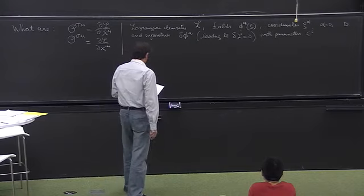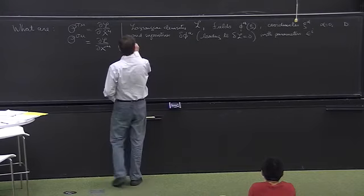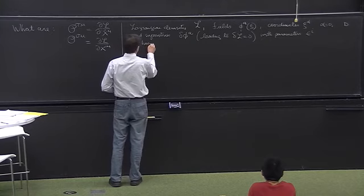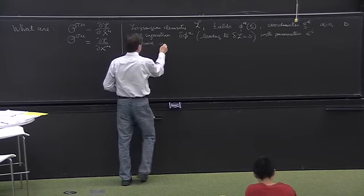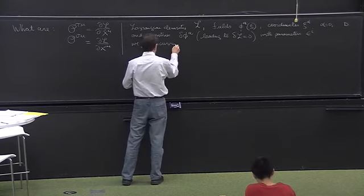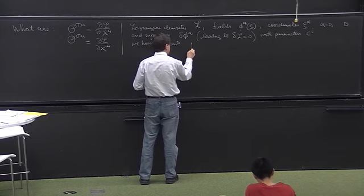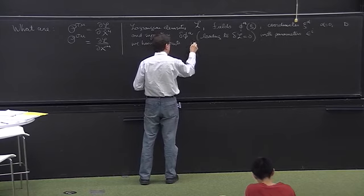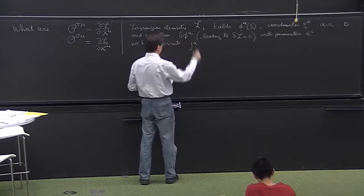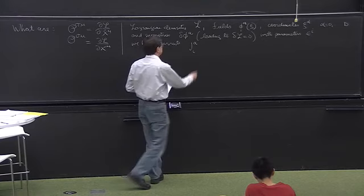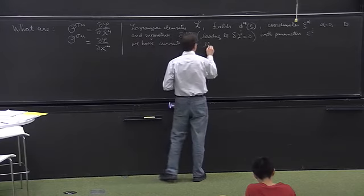Then we have currents j^α_i that are conserved. There is a current for each independent parameter of the symmetry.